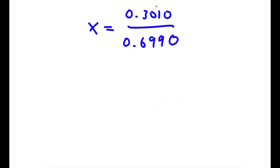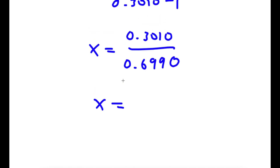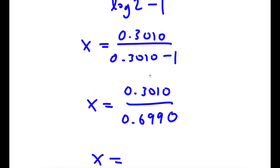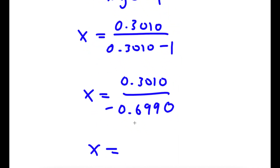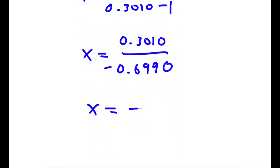Finally, if I divide these two, this is actually negative 0.6990 in the denominator, so x is equal to negative 0.43.